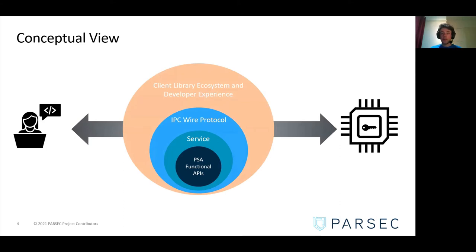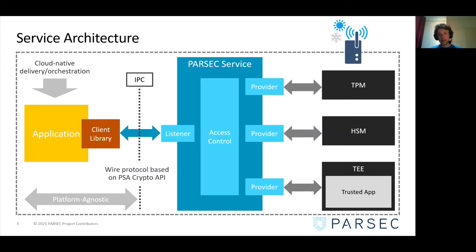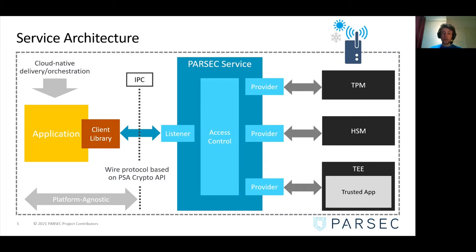Let's see in more detail what the service architecture looks like. The Parsec service is built around a front-end and back-end architecture. On the front-end, you have the listener, which is the component responsible for taking in the requests of all clients on your system. The listener knows the wire protocol and passes the request deeper in the service, where access control is performed between the different tenants, and requests are passed to the specific providers that need to respond. The provider is the back-end of the service — it has the hardware-specific knowledge on how to communicate with the root of trust.